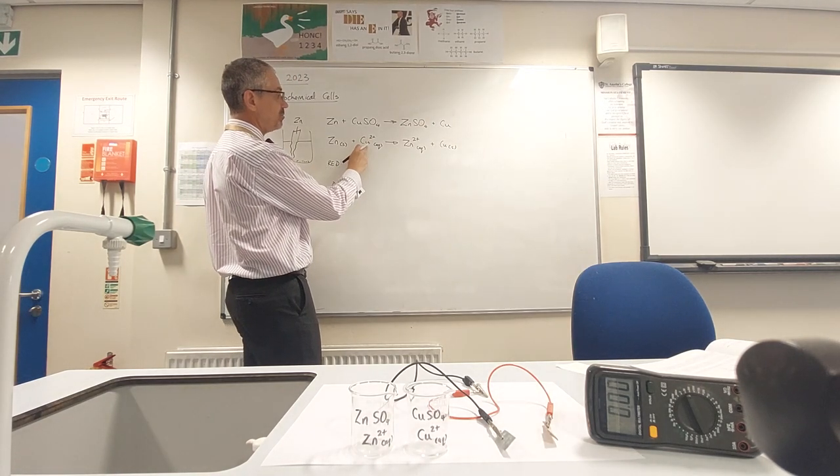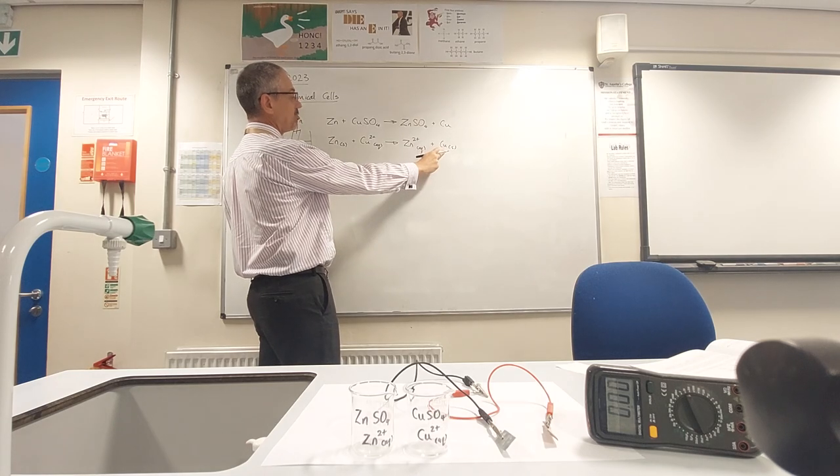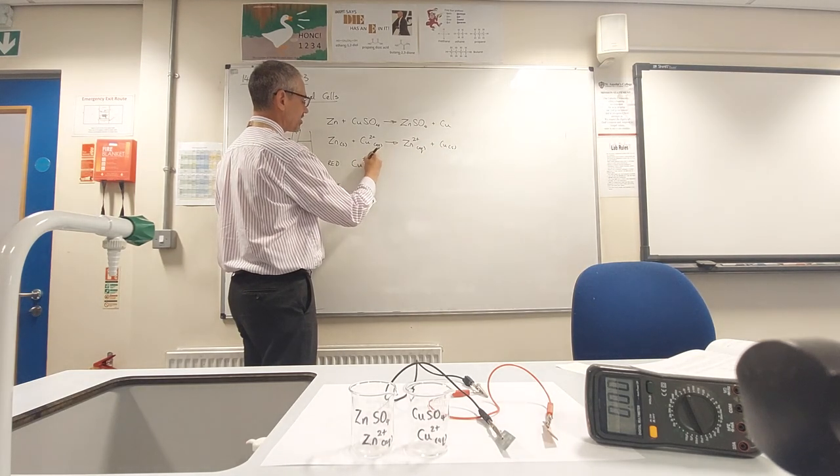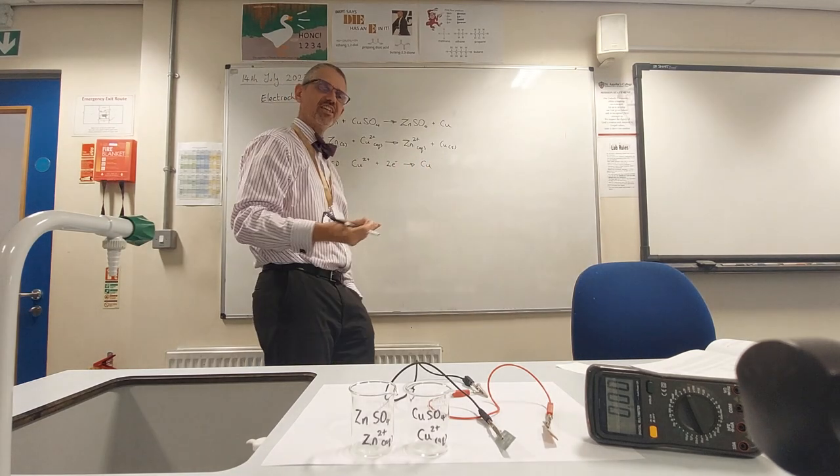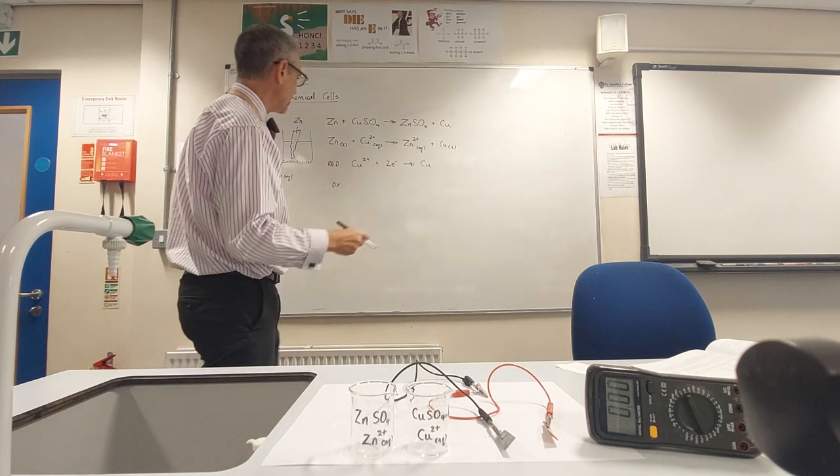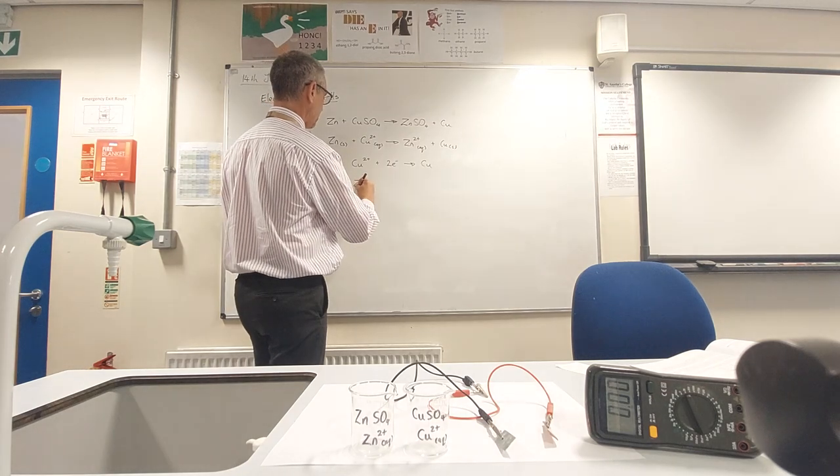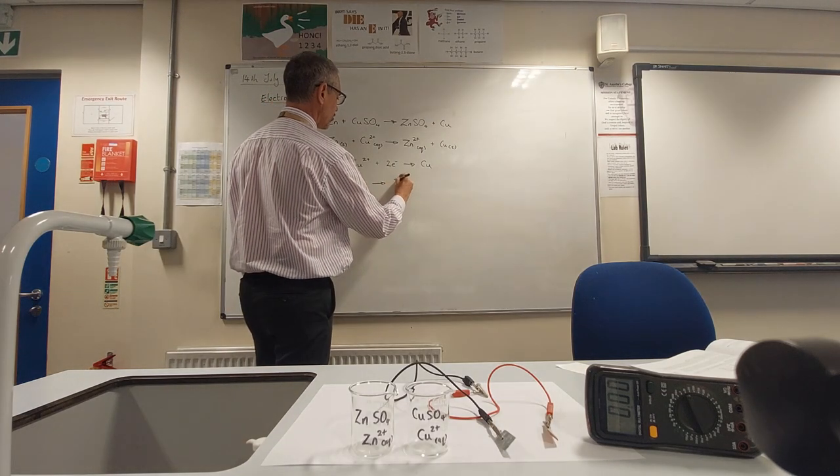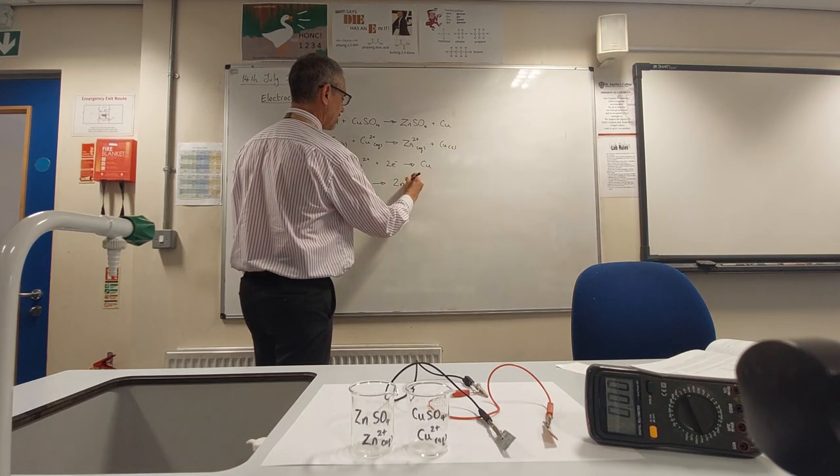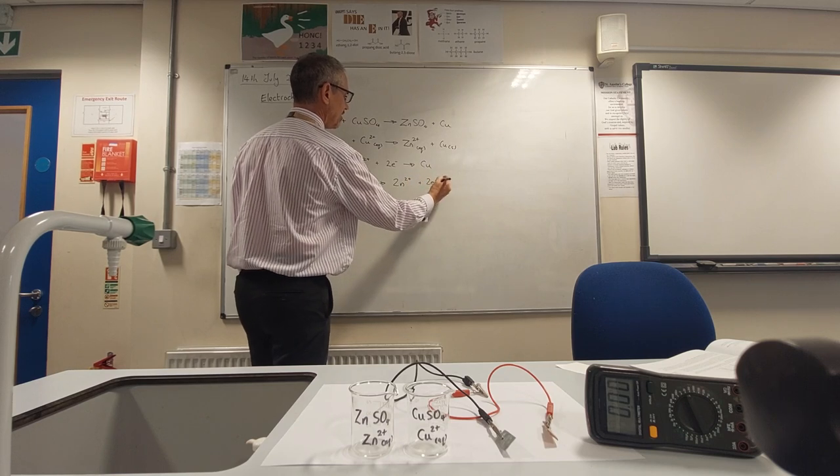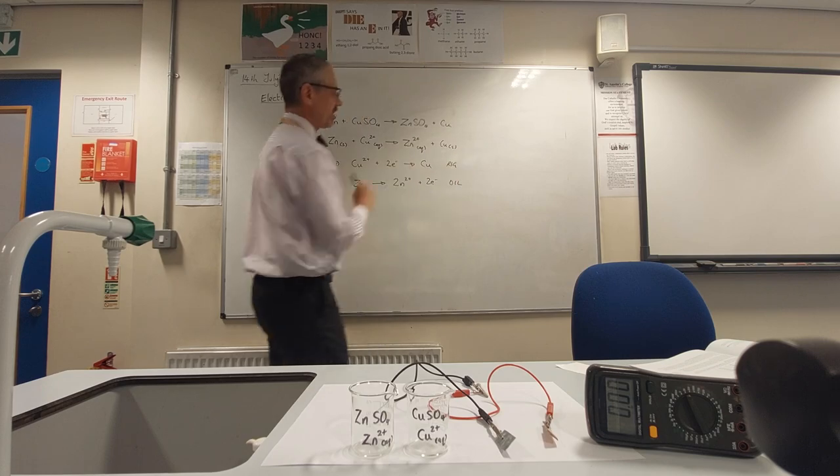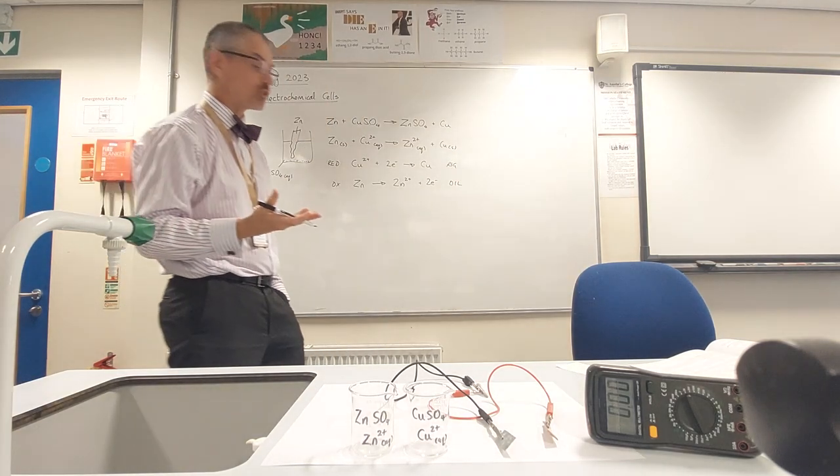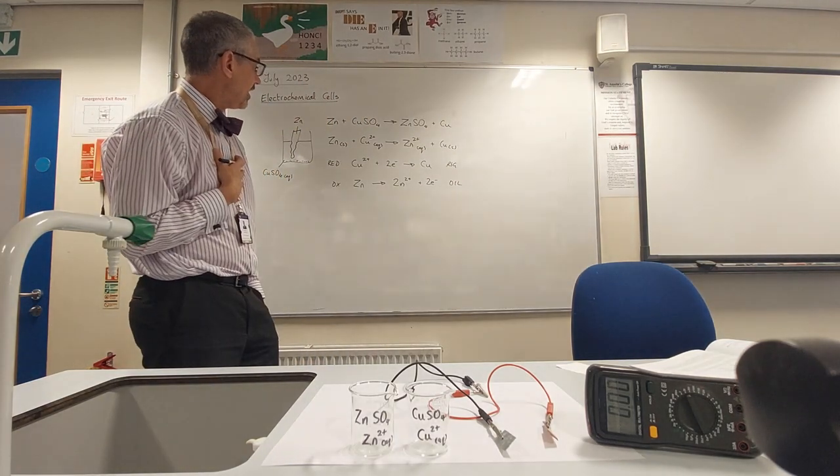Copper 2+ is going to copper zero, so that's being reduced. If the oxidation state goes down, it's being reduced—the oxidation state is reduced, it's been reduced, that's the easier way to remember it. And the zinc is losing electrons: zinc goes to zinc 2+ ions plus two electrons. Remember, oxidation is loss, reduction is gain of electrons.